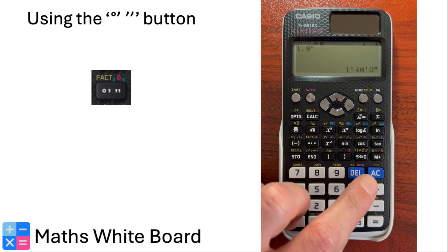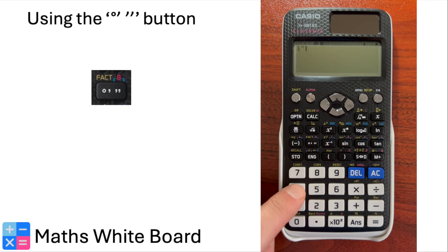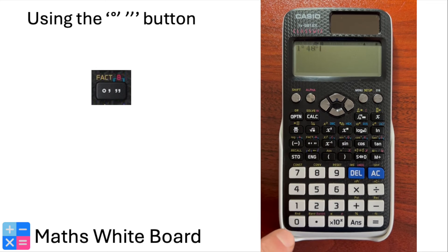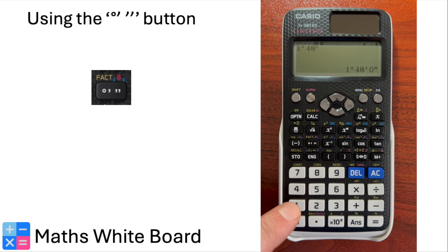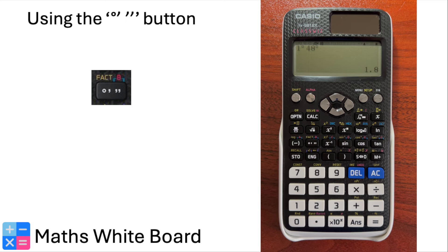To convert it back, press 1, then the degrees, minutes and seconds button, then press 48, then the degrees, minutes and seconds button again, before selecting equals. To convert this into a decimal, select the SD button twice. You've successfully used the time function on your scientific calculator. Remember, mastering this function can be a valuable asset in various maths lessons.